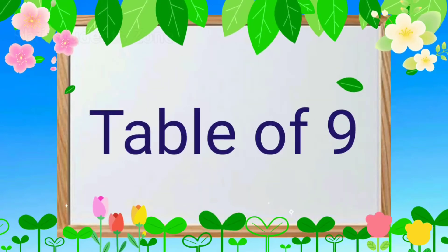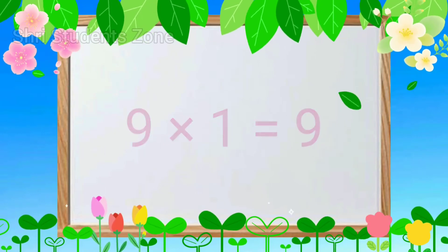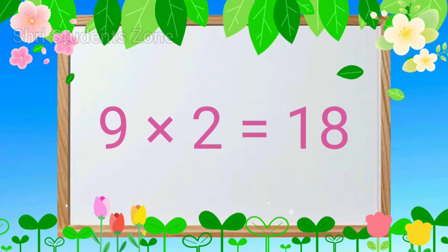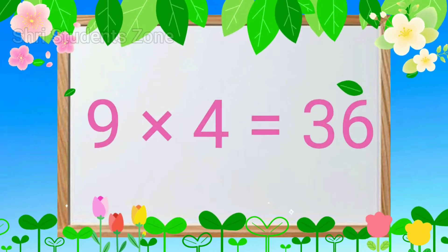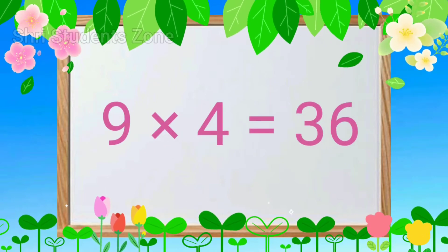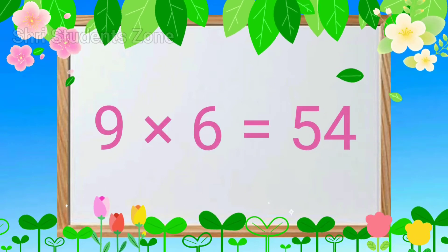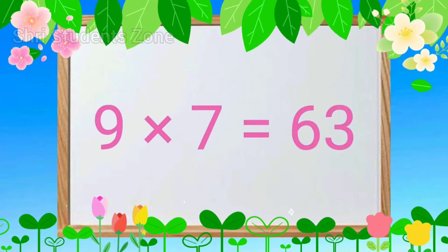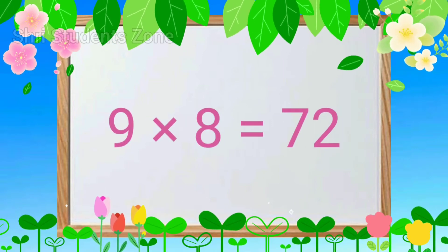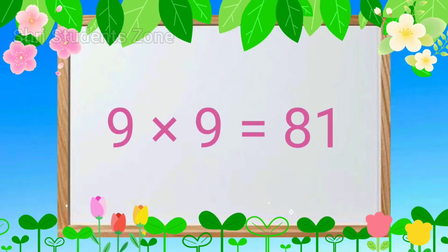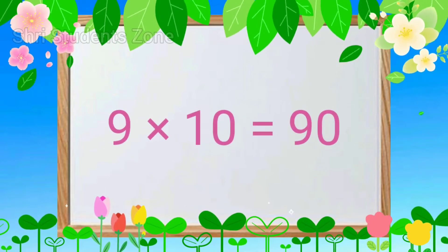Table of 9. 9 1s are 9, 9 2s are 18, 9 3s are 27, 9 4s are 36, 9 5s are 45, 9 6s are 54, 9 7s are 63, 9 8s are 72, 9 9s are 81, 9 10s are 90.